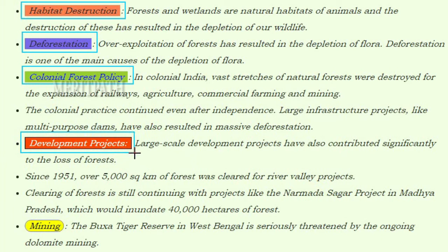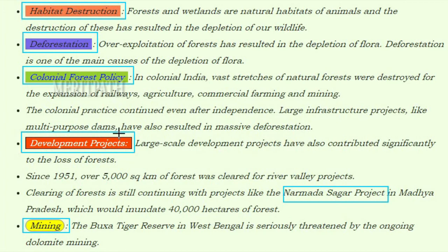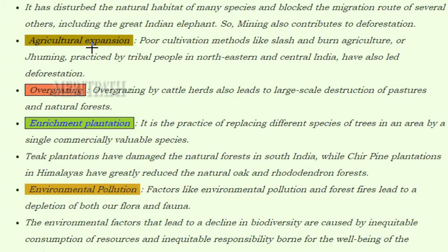Large-scale development projects have also contributed significantly to forest loss. Since 1951, over 5,000 square kilometers of forest were cleared for river valley projects, and clearing continues with projects like the Narmada Sagar Project in Madhya Pradesh, which would inundate 40,000 hectares of forest. Mining is another cause — the Buxa Tiger Reserve in West Bengal is seriously threatened by ongoing dolomite mining, which disturbs natural habitats and blocks migration routes of species including the great Indian elephant.